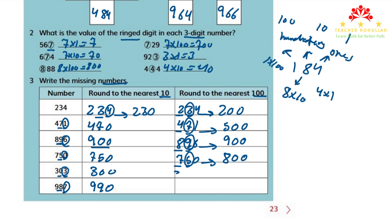The fifth number is 303: we underline 3 in the hundreds place and circle 0. Since 0 is 4 or less, we round down and get 300. The last number is 987: we underline 9 in the hundreds place and circle 8 in the tens place. Since 8 is 5 or more, we round up and the number we get is 1000.